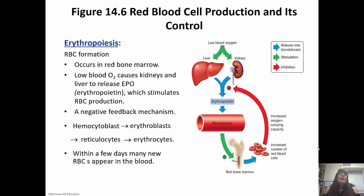Erythropoiesis is red blood cell formation and happens in the red bone marrow. Low blood oxygen causes the kidneys and liver to release erythropoietin, the hormone we talked about in chapter 13, and that stimulates red blood cell production — it's a negative feedback mechanism. A hemocytoblast differentiates into erythroblasts, which differentiate into reticulocytes, and then finally mature into erythrocytes. We also briefly talked about blood doping, where some athletes take out some of their red blood cells, then re-inject their blood right before a race to have extra oxygen-carrying capacity — though it's dangerous because you're also adding to blood volume.